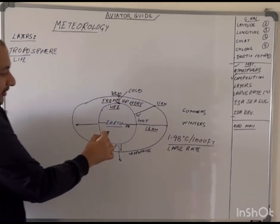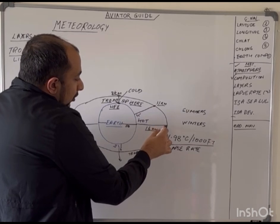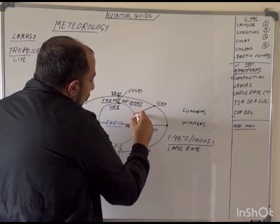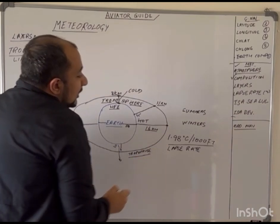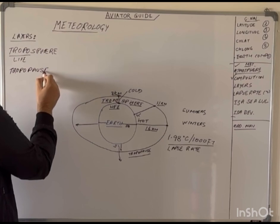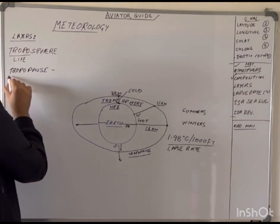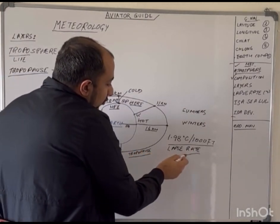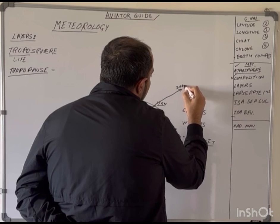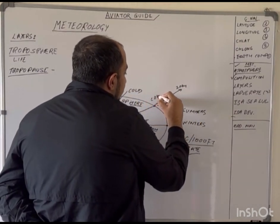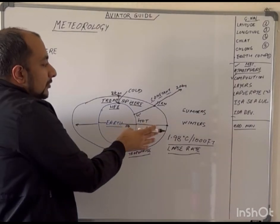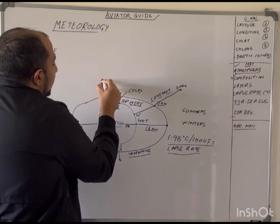The temperature decreases from the surface of the Earth up until the tropopause — covering all of the troposphere up to a height of 16 km over the equator and 8 km over the poles, with approximately 11 km at 45 degrees latitude. The tropopause is defined as the end of the temperature fall. From the tropopause, at about 11 km, to about 20 km, the temperature is constant.